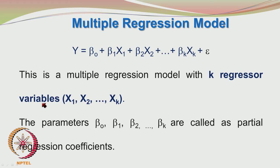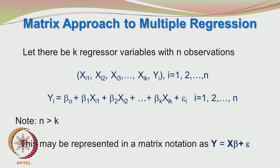The factors or regressor variables are X1, X2, up to Xk. The parameters beta0 through betak are called partial regression coefficients. For a matrix approach to multiple linear regression with k regressor variables and n observations, where index i represents the run number, Xi1, Xi2, through Xik are the X values for the ith run. The model is given by beta0 plus beta1·Xi1 plus beta2·Xi2 up to beta_k·Xik plus epsilon_i. The number of experimental settings should be greater than the number of regression parameters.